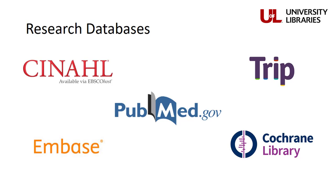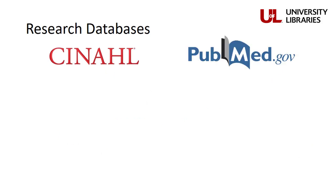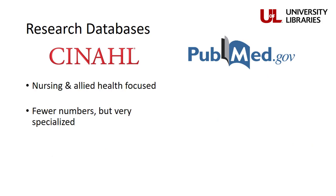Now that we've discussed the various types of research literature, it's time to discuss where to find it. Research literature is found in research databases like the ones shown above. These databases hold collections of thousands of different journals and citations for all the articles published in them. We're going to stick to the two biggest ones for nursing. CINAHL is important because it collects journals solely on nursing and allied health. This tight focus means CINAHL indexes a smaller collection of journals, but it also includes specialized journals like the Journal of Infusion Nursing that aren't included in any other databases. CINAHL also includes literature besides just studies and reviews, including dissertations and book chapters.